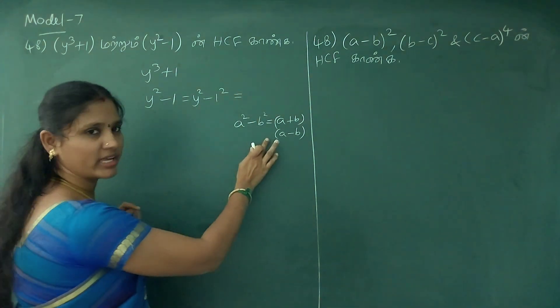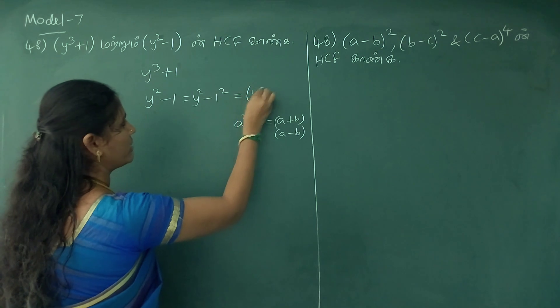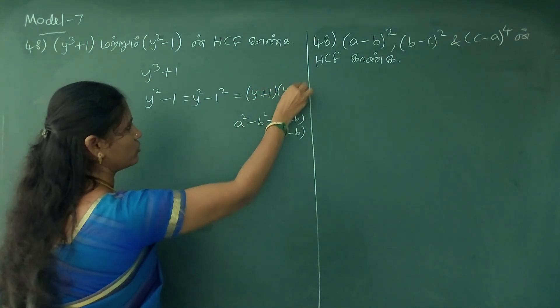Here a is substituted by y, and b is substituted by 1. So we get y plus 1 and y minus 1.